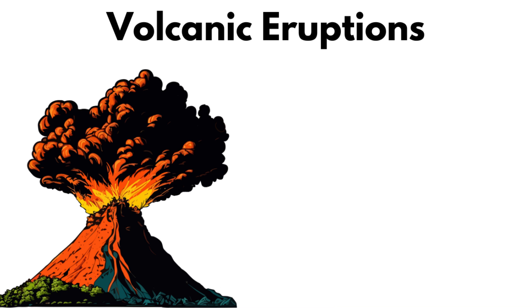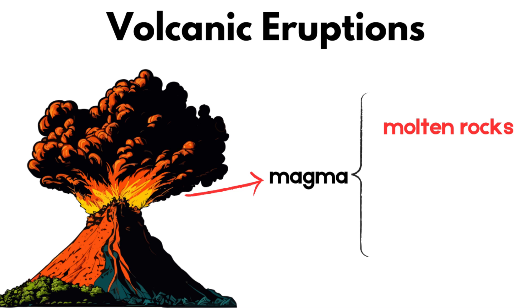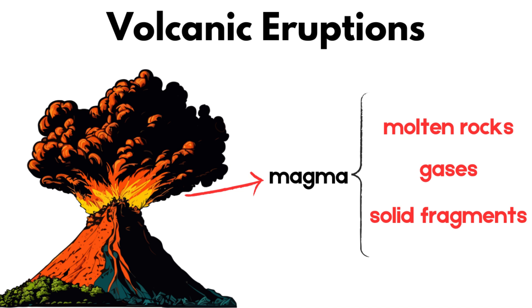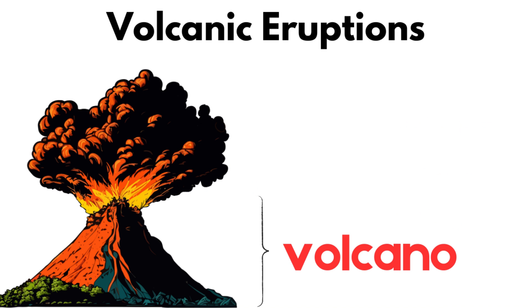Volcanic eruptions. A volcanic eruption is a geological phenomenon that occurs when magma, composed of molten rock, gases, and solid fragments, is expelled from the Earth's interior to the surface through an opening in the Earth's crust called a volcano.